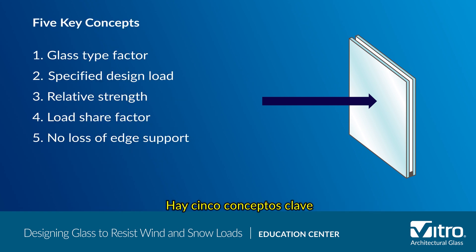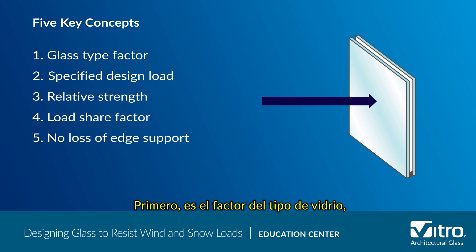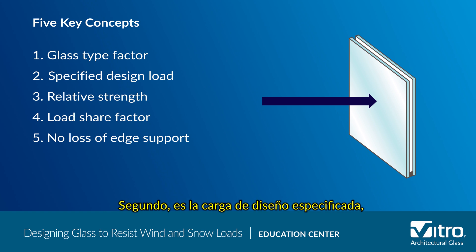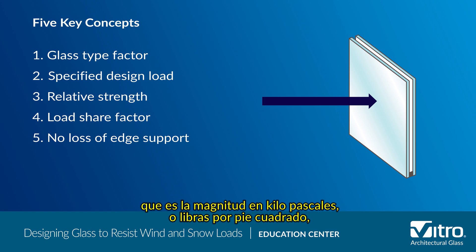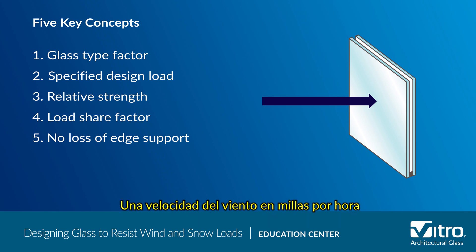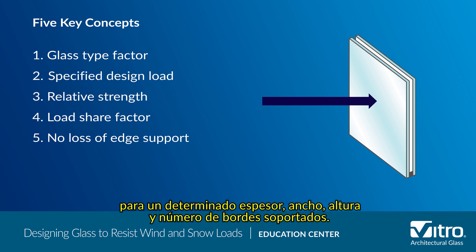There are five key concepts that impact the wind and snow load calculations on a project. First is the glass type factor, which is the multiplying factor for adjusting the load resistance of different glass types. Second is the specified design load, which is the magnitude in kilopascals or pounds per square foot of the type and duration of the load specified by the building code. A wind velocity in miles per hour can easily be converted to pounds per square foot by a simple formula. Third is the relative strength of the glass for a given thickness, width, height, and number of supported edges.